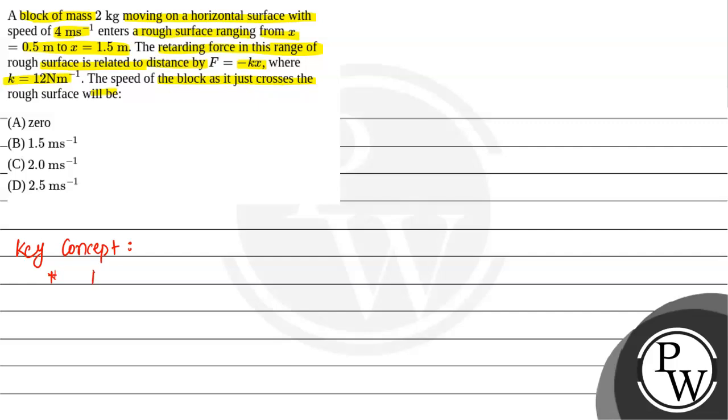So retarding force here is given as minus k times x because it is a retarding force, there is a negative sign that is opposing the motion. Next, as we know that force is always equal to mass times acceleration. So here we will compare and then we will try to implement the relation between the velocity and the position.